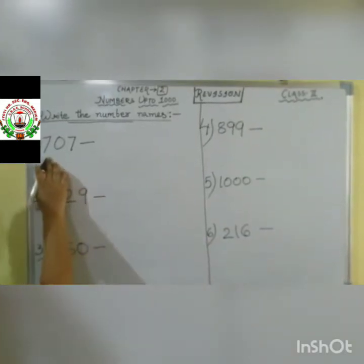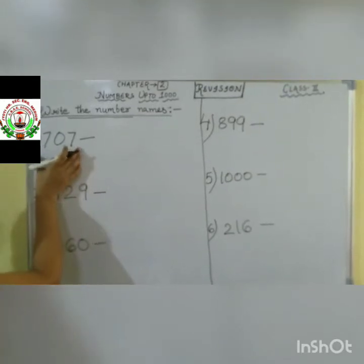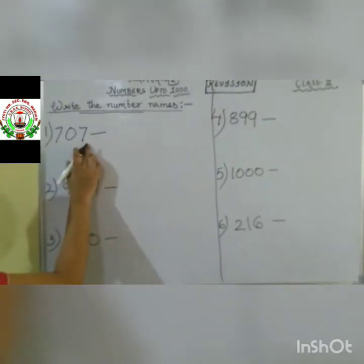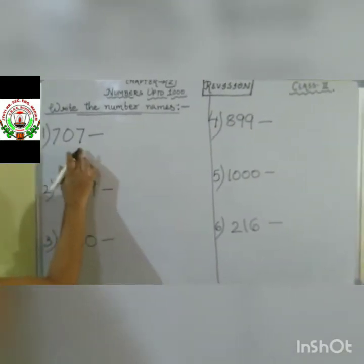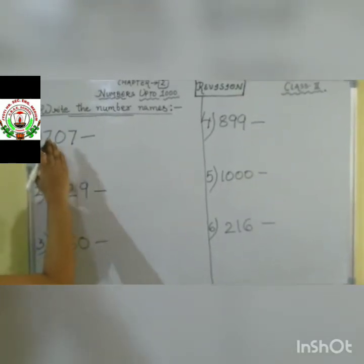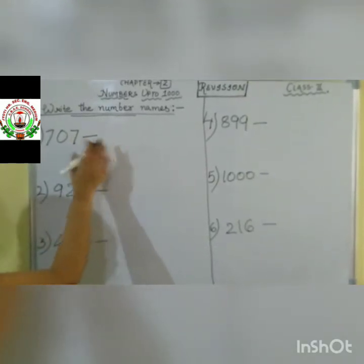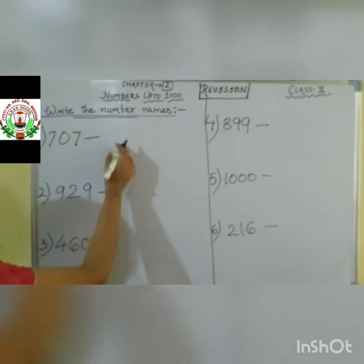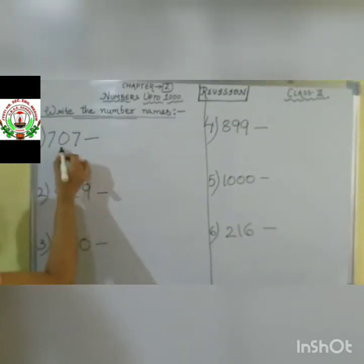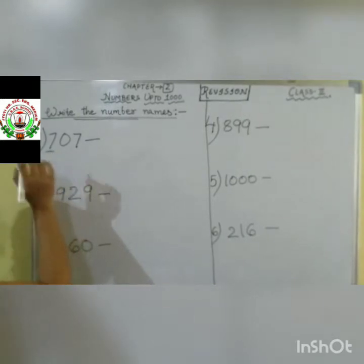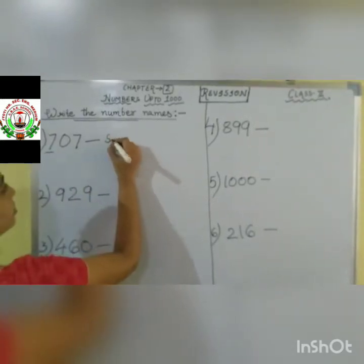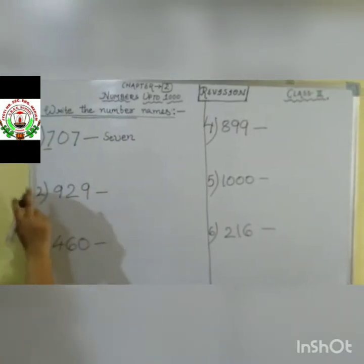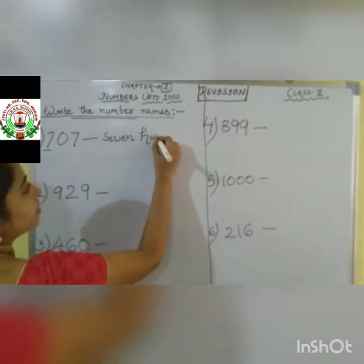First question here given is 707. We all together read this number as seven hundred and seven. So in the same way we have to write down the spelling. Whatever spelling you are reading, the same way you have to write down the words. 707 — first word we are saying is seven, so we will write down seven. Then we are saying hundred, so we write seven hundred.